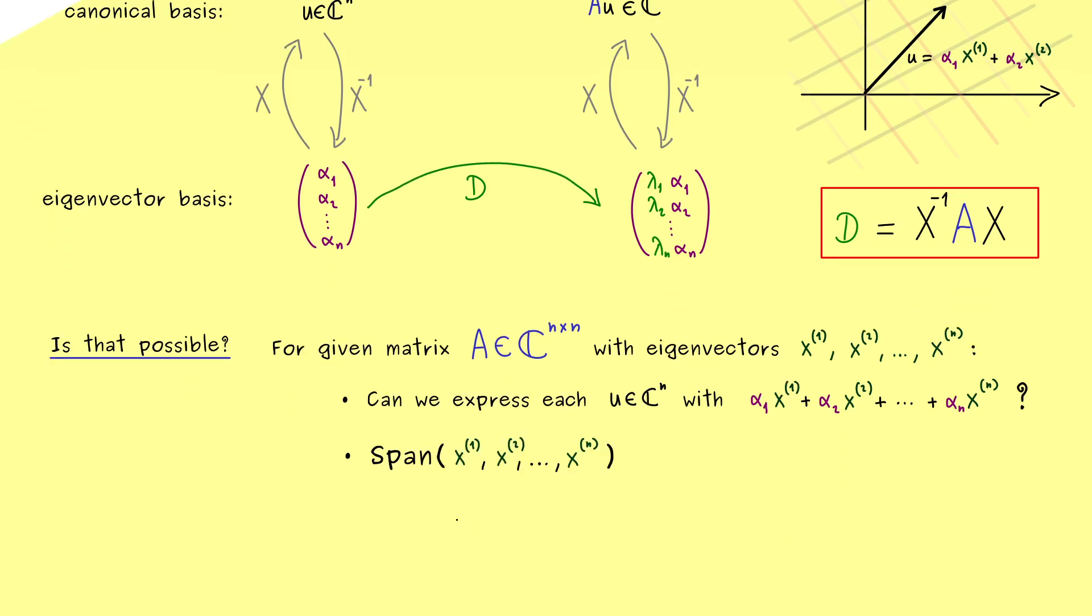Of course, there we have some freedom. Therefore the question is, can we choose them in such a way that we get the picture above? Therefore, we could reformulate the question as, can we express each vector u in C^n as a linear combination consisting of eigenvectors? Of course, if we can, we can rewrite u with the coordinates here and the whole picture works. Hence, what we actually want here is that the eigenvectors of A span the whole C^n.